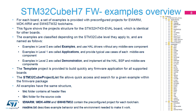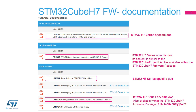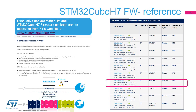All examples have the same structure. A readme text file describes the example behavior and the environment needed to make it work. Rich documentation is associated with the STM32CubeH7 firmware package. Some documents are generic to all STM32 series and others are specific to the STM32H7 series. The Getting Started with the STM32CubeH7 Firmware Package User Manual is the document you should read first. The STM32CubeH7 firmware can be downloaded from ST's website at www.st.com/STM32CubeFW. Thank you.